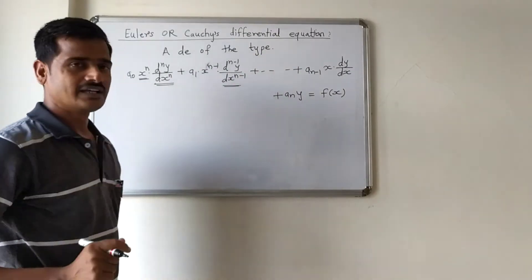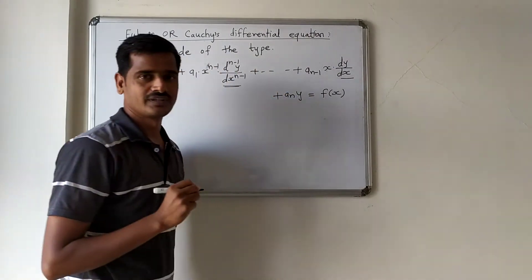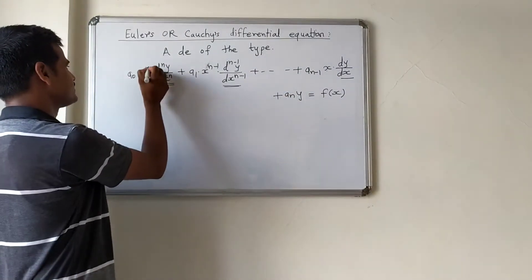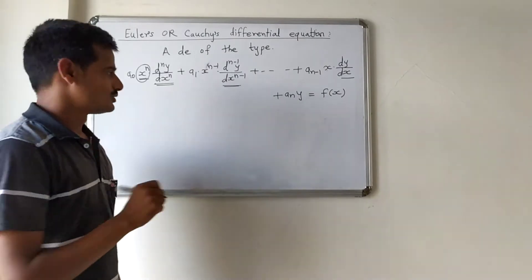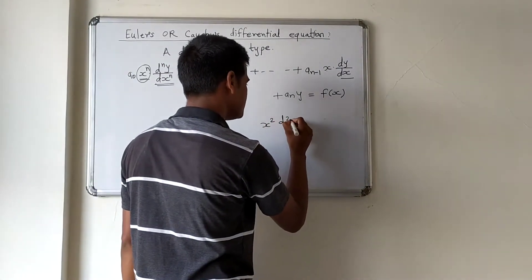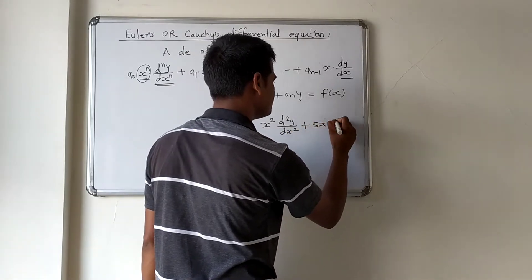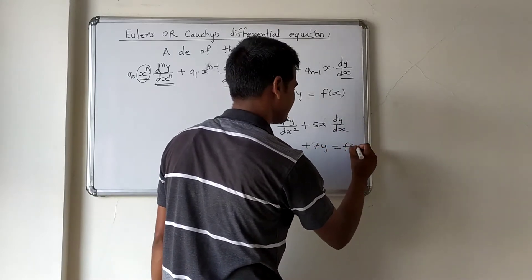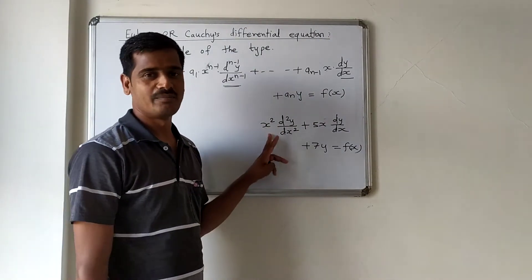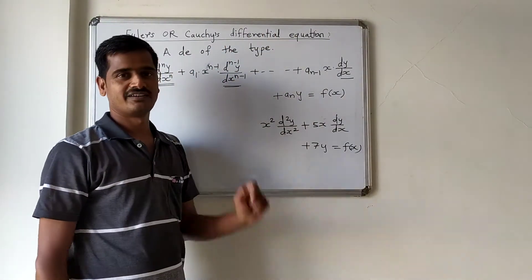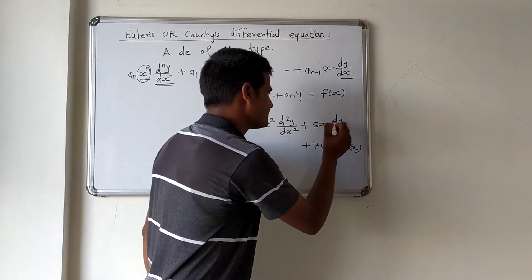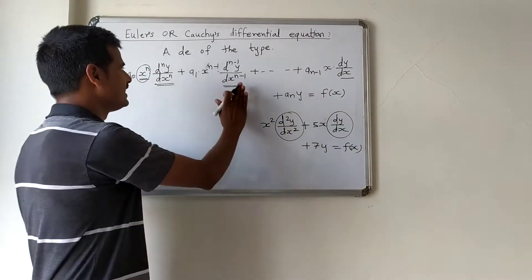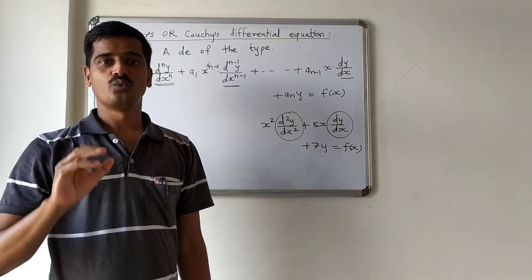How to identify this form? If x is attached with dy/dx, x² is attached with d²y/dx², and so on — meaning the nth derivative is multiplied by xⁿ. For example, x² (d²y/dx²) + 5x (dy/dx) + 7y = f(x) is Euler's or Cauchy's differential equation because x is attached with dy/dx and x² is attached with d²y/dx². This is a linear differential equation with variable coefficients.